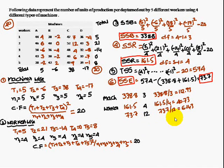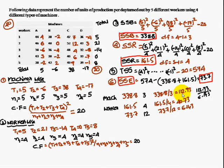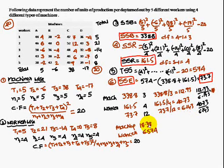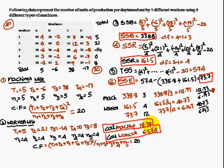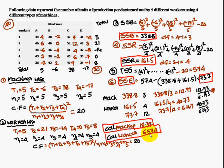Apply the F-test. For machines: F = 112.93 / 6.143 = 18.38. For workers: F = 40.73 / 6.143 = 6.574. So the calculated F value for machines is 18.38 and for workers is 6.574.